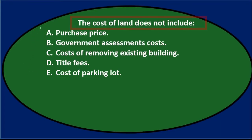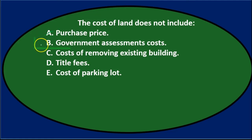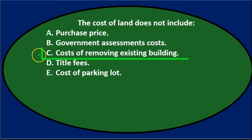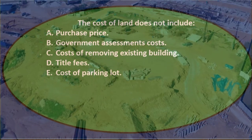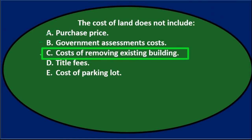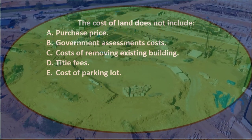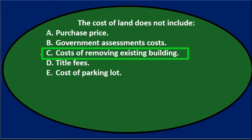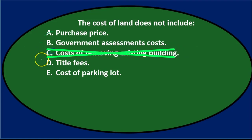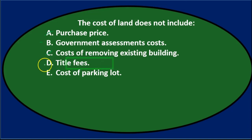The cost of land does not include — A, the purchase price, is obviously going to be part of the cost of land. B says government assessment costs — that could be a cost included in land, so let's leave that for now. C says costs of removing an existing building. This one comes up a lot: if we buy land to build a new building and there's already an existing structure, we have to tear it down to make the land useful. That removal cost is included in the cost of land, not separately as a building cost. D says title fees — we include any title fees related to the land in the cost of the land.